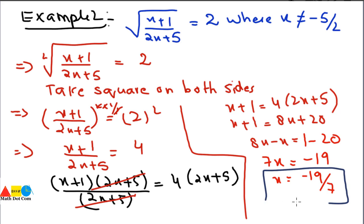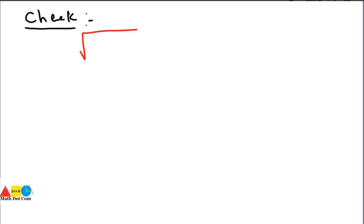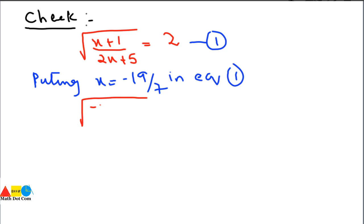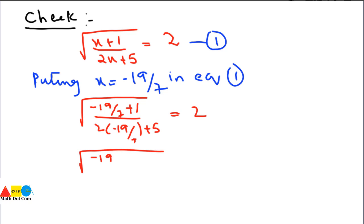Let's check this solution by putting the value back into the original equation. The equation was: square root of (x + 1) / (2x + 5) = 2. Putting x = -19/7: we get the square root of (-19/7 + 1) divided by (2 × -19/7 + 5) equals 2.